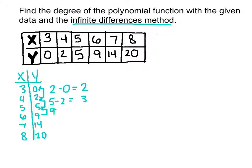9 minus 5 gives us 4. 14 minus 9 gives us 5. And 20 minus 14 gives us 6.